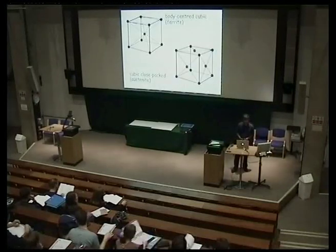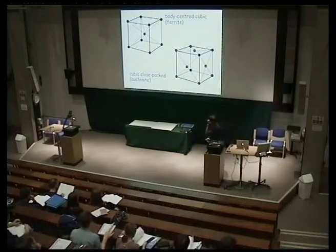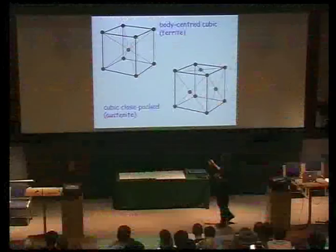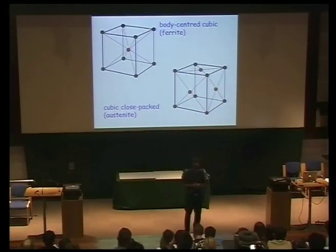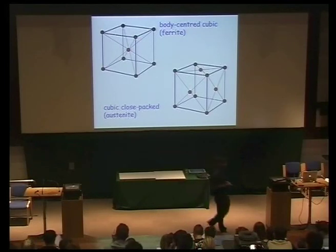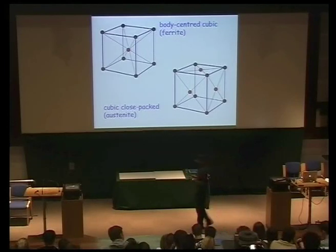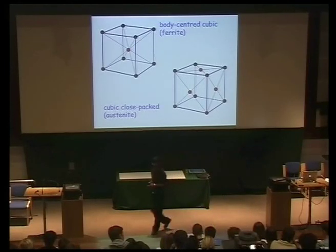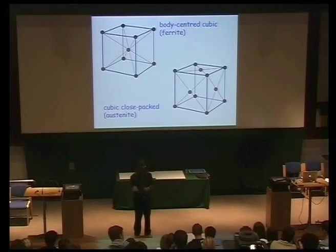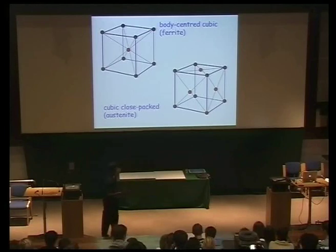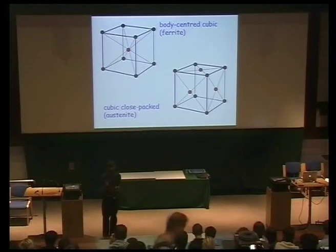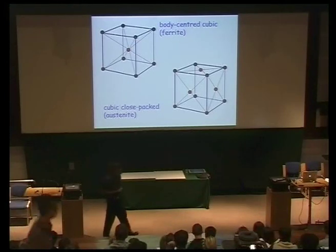You're familiar with two allotropic forms of iron. One is the body-centered cubic phase, often called ferrite, and then we have the cubic close-packed or austenite phase which exists at higher temperatures, above 910 degrees centigrade in pure iron. But there are many other allotropic forms of iron which I can't go into today. And it is the transformations between these two forms which govern the properties of most alloys of iron.